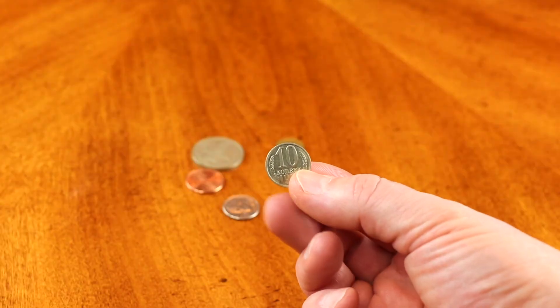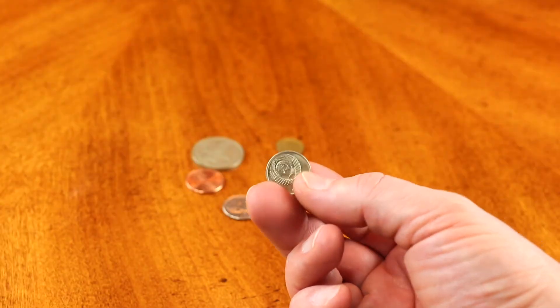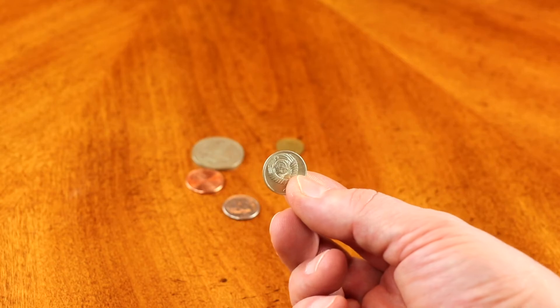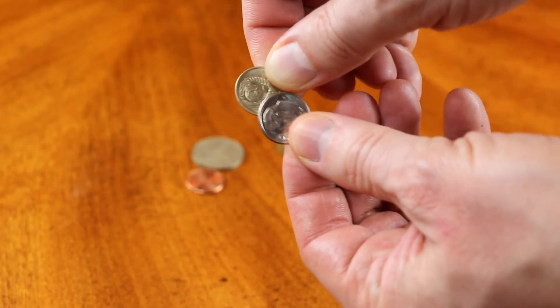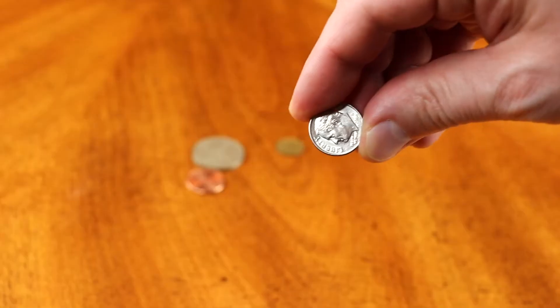But for this experiment I'm going to be using ten Russian cents coin. And it's pretty much the same size as dime. Look at that, they're basically the same. And if I put them like this, you can see better.